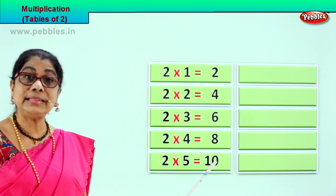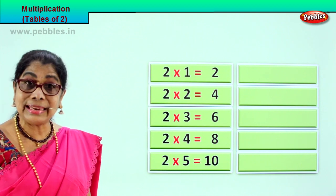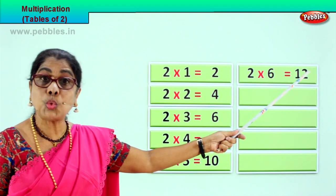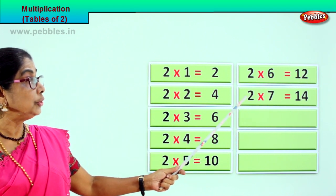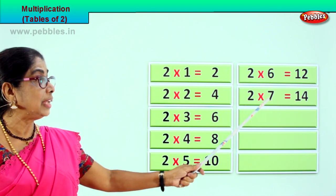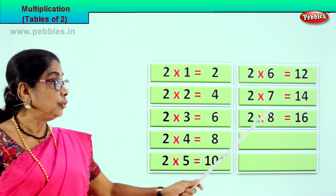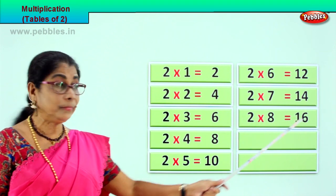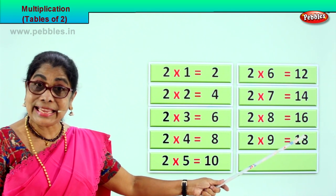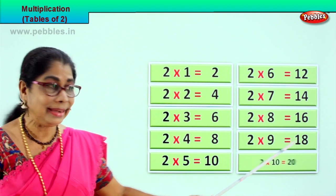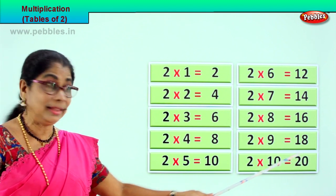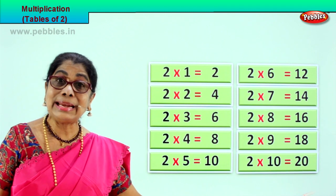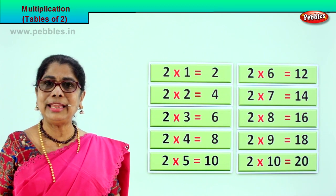Two fives are ten. Two fives are ten. Next: two sixes are twelve. Two sixes are twelve. Look and say it: two sevens are fourteen. Two eights are sixteen. Two nines are eighteen. Two nines are eighteen. And two tens are twenty. Two tens are twenty. To remember the table, you need to look and repeat every day. Then you will remember.